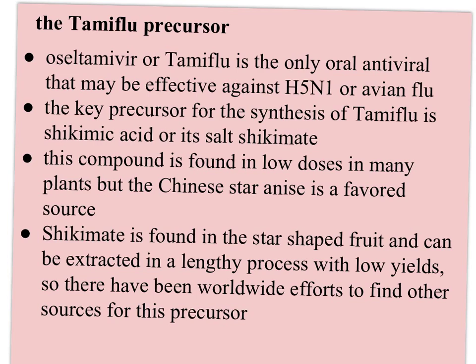To finish up, I want to talk about the Tamiflu precursor, the molecule that led to the development of Tamiflu, because it's a great example of green chemistry being put into practice. Tamiflu is the only oral antiviral that may be effective against avian flu or the H5N1 strain. The key precursor for the synthesis of Tamiflu is shikimic acid, or its salt shikimate. This compound is found in low doses in many plants, but the Chinese star anise is a favored source. Shikimate is found in the star-shaped fruit and can be extracted, but it's a lengthy process with fairly low yields.